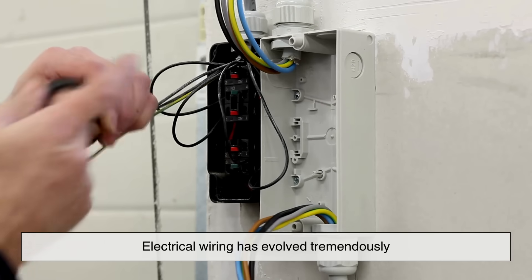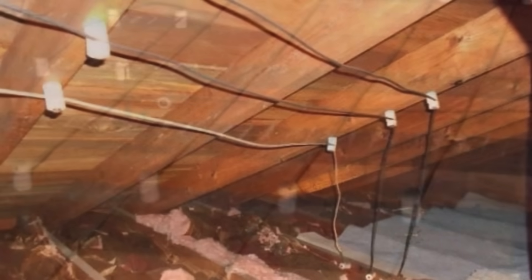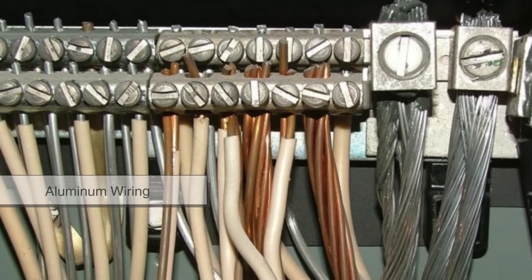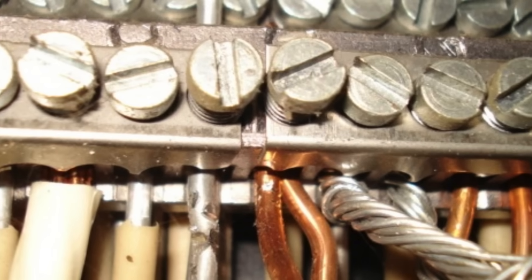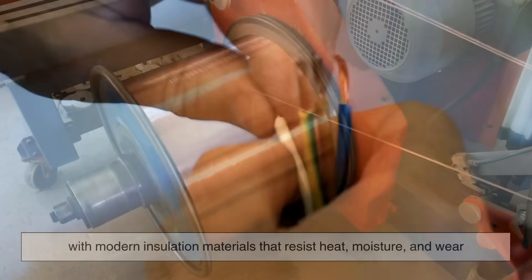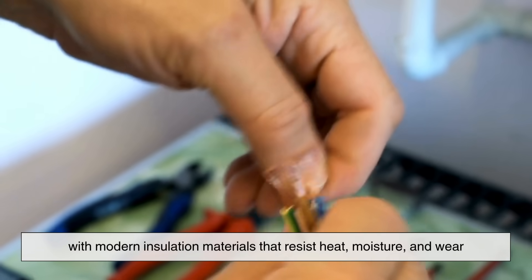Electrical wiring has evolved tremendously. Decades ago, homes used knob and tube wiring, which looks almost ancient by today's standards. Later, aluminum wiring became common, but it had its own safety issues. Today, copper remains the gold standard, with modern insulation materials that resist heat, moisture, and wear.